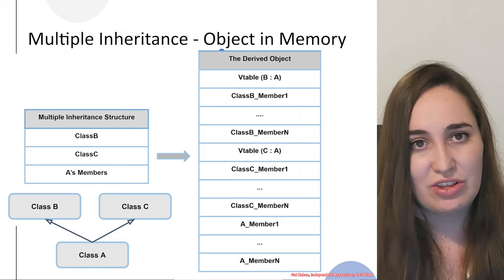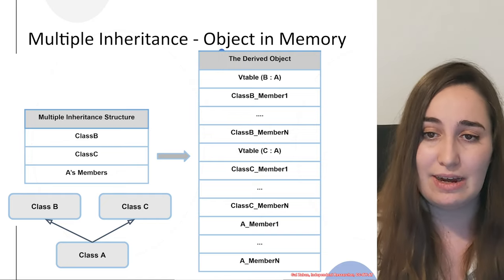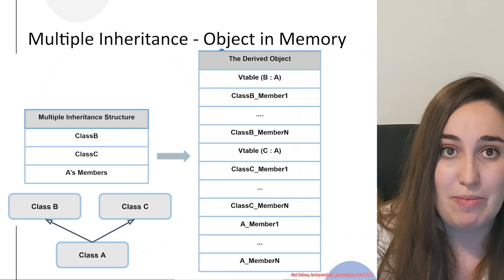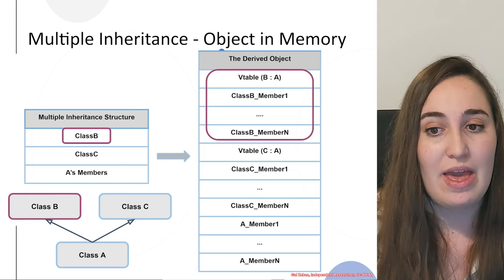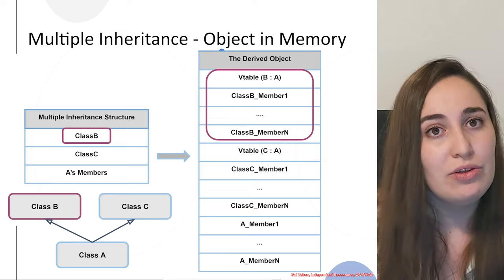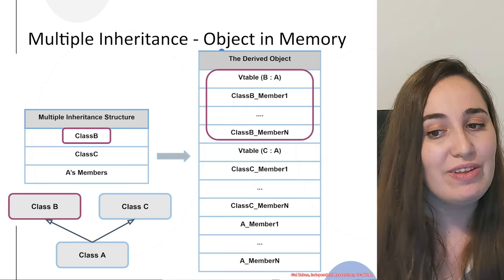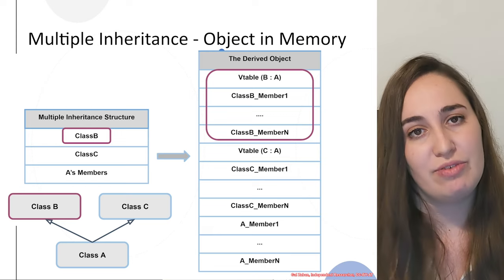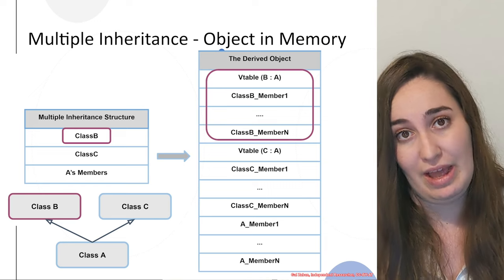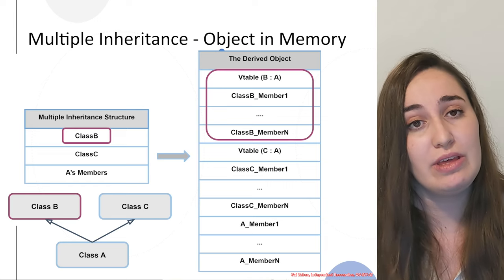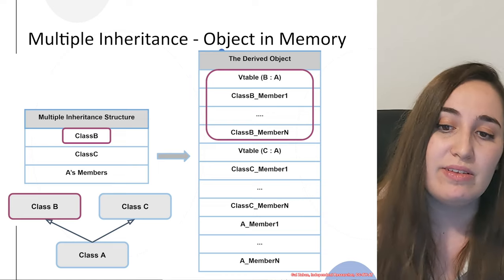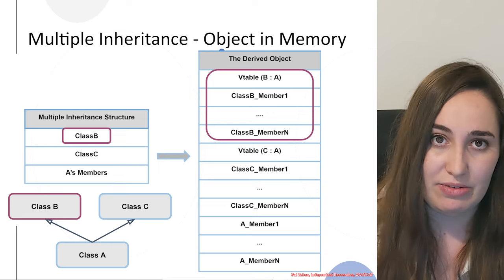Taking the simple example of class A that inherits from class B and class C, we examine how the derived object looks in memory. First, the constructor calls the constructor of class B. You would first see a V table containing both the functions relevant from the base class B and the functions relevant from the derived class A. Afterwards, you would see all the class B members stored one after another inside the object.